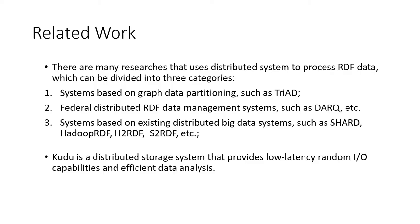Systems based on existing distributed big data systems, such as SHARD, HadoopRDF, which uses properties to divide RDF data into multiple fields, H2RDF, which uses HBase to store all six permutations of triples. S2RDF uses the Spark system. It proposes extended vertical partition structure to accelerate the join operation in the query process. Kudu is a distributed storage system that provides low-latency random I/O capabilities and efficient data analysis.